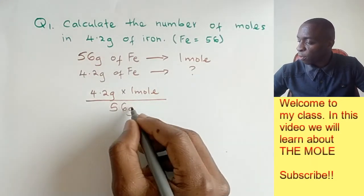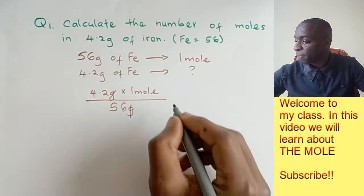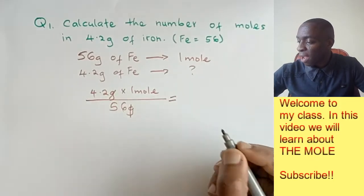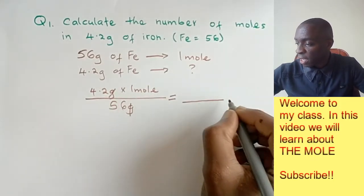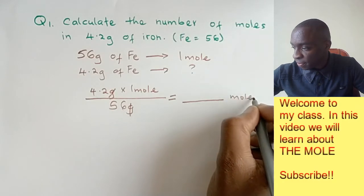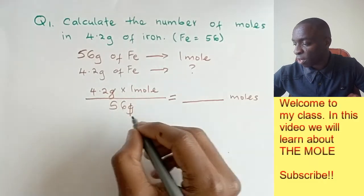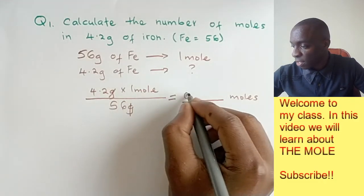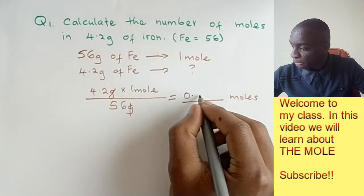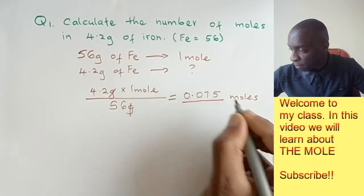We cross out the grams, and our answer will be in moles. If you punch this into the calculator, 4.2 times 1 over 56 gives us 0.075 moles.